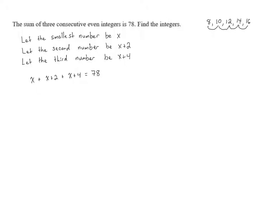Let's start solving by combining like terms. x plus x plus x is 3x, but 2 plus 4 gives us 6. So we have 3x plus 6 on the left-hand side, and that's equal to 78.